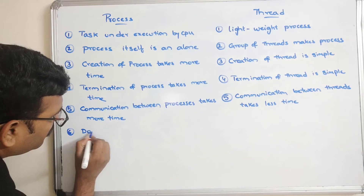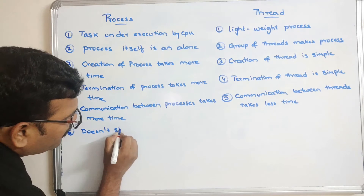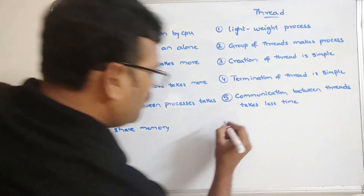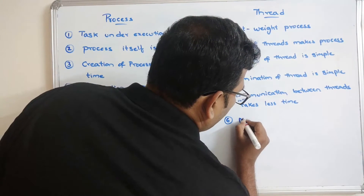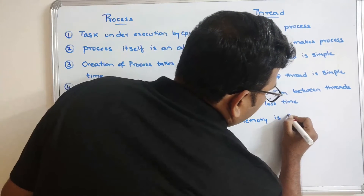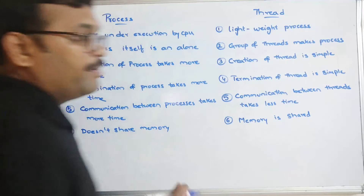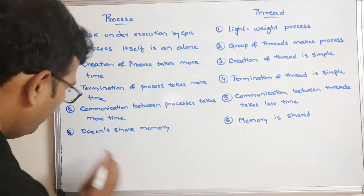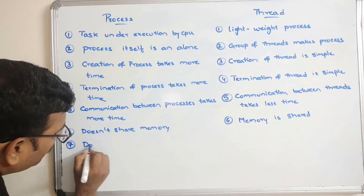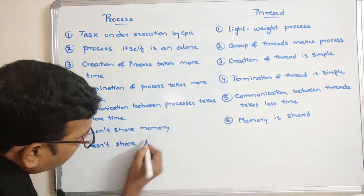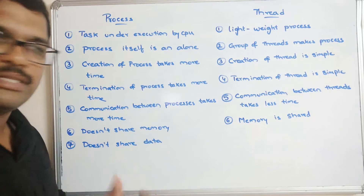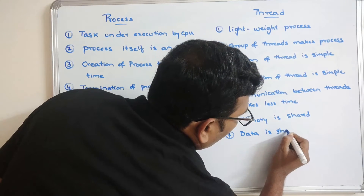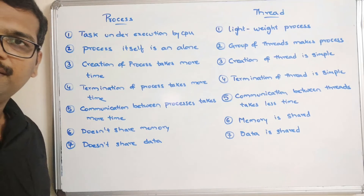Among different processes, memory is not shared. For threads, memory is shared. Since memory is shared among threads, the data available in that memory is also shared among them. So processes do not share data with each other, whereas data is shared among different threads.